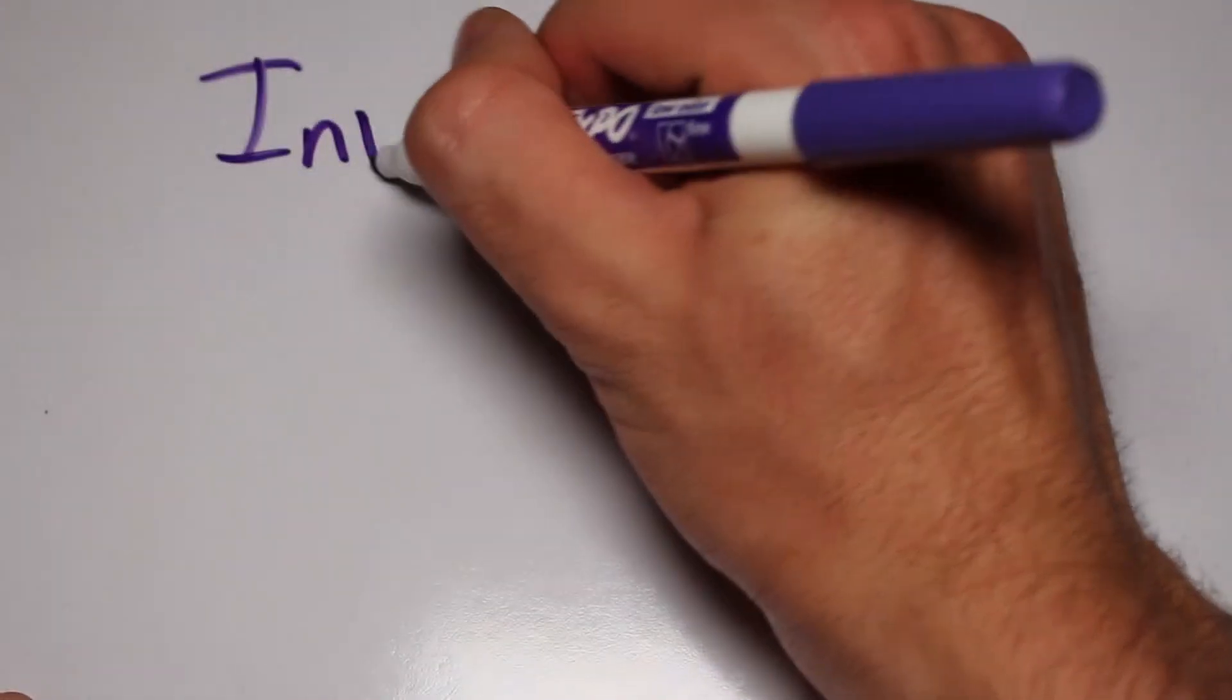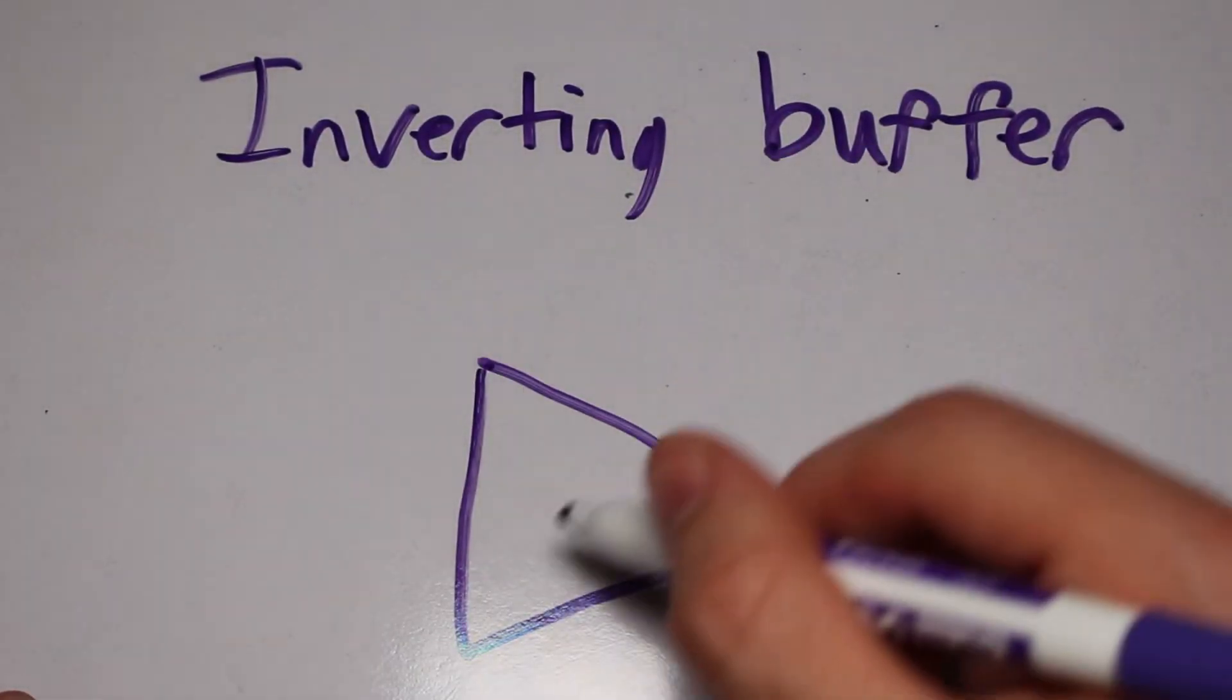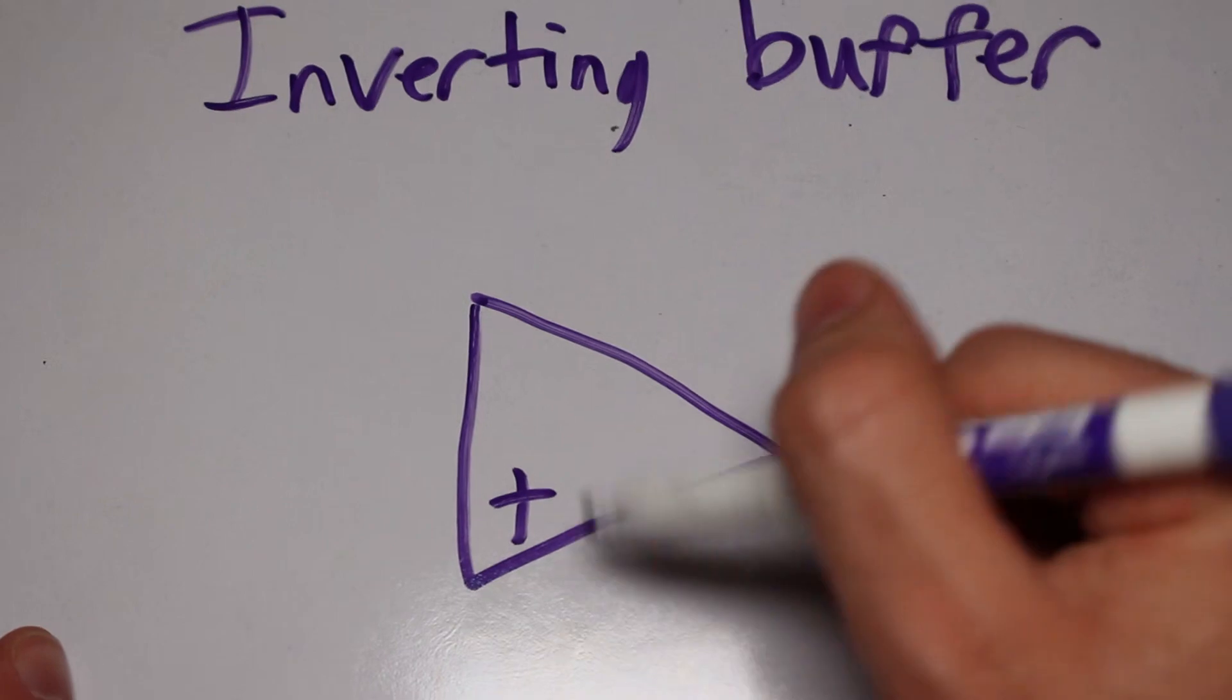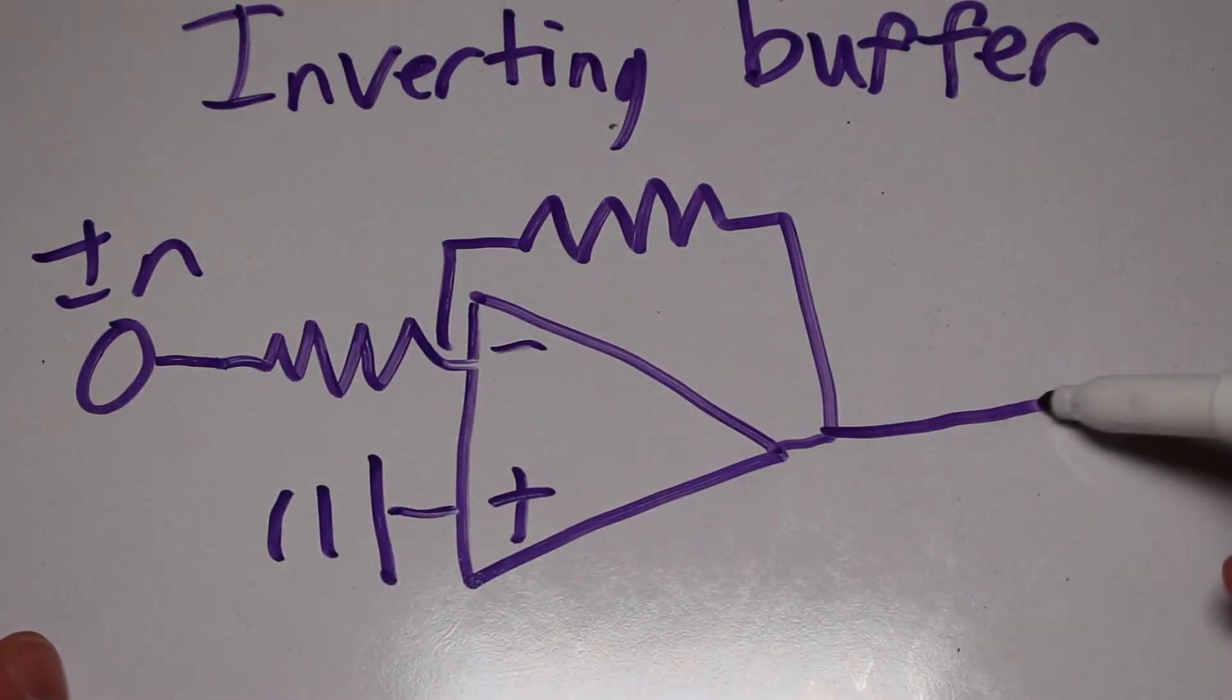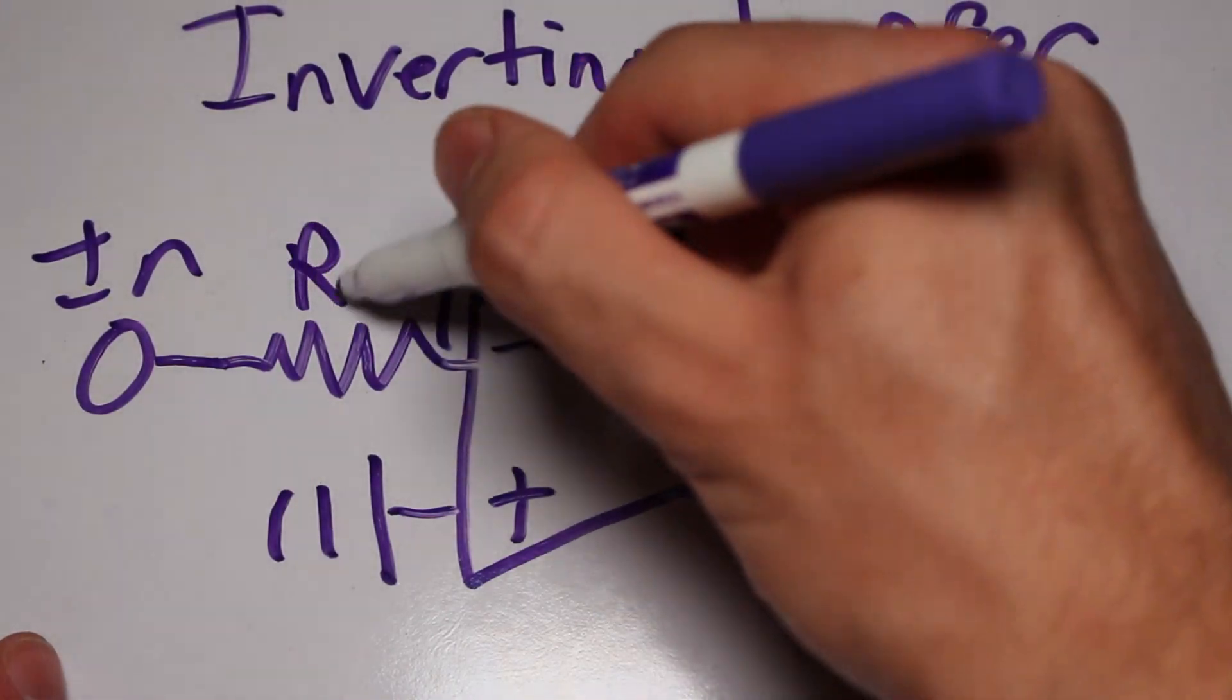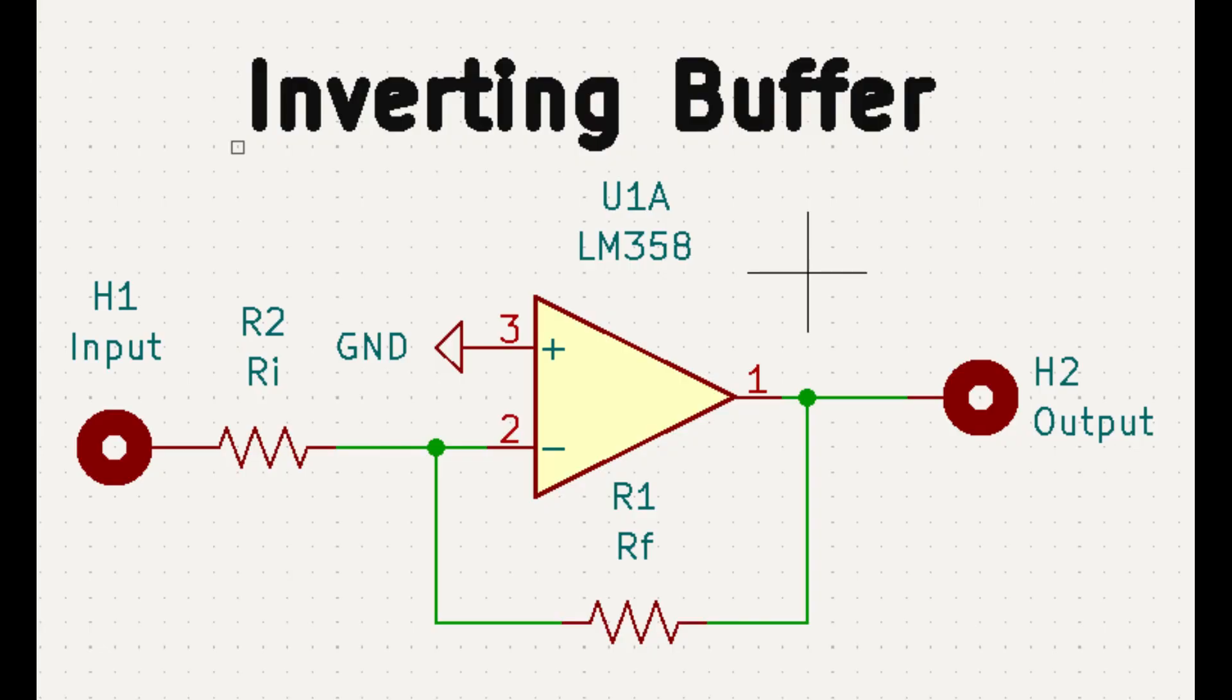There's another type of buffer that we can make, and that is the inverting buffer. It does exactly what it says. It copies the input onto the output, but it also makes it negative, or positive if the input was negative to begin with. This example also introduces the concept of gain. We start by connecting the non-inverting input to ground. This will be the point in which the op-amp inverts about.